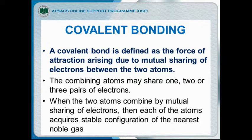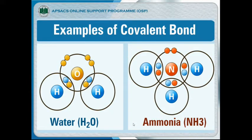When two atoms combine by mutual sharing of electrons, each of the atoms acquires a stable configuration of the nearest noble gas. For example, water is made up of one oxygen and two hydrogen atoms. Oxygen has six electrons in the valence shell and requires two more to complete its octet, whereas hydrogen has one electron in the valence shell and requires one more to complete its duplet. One oxygen atom shares one electron each with two hydrogen atoms to form the water molecule.